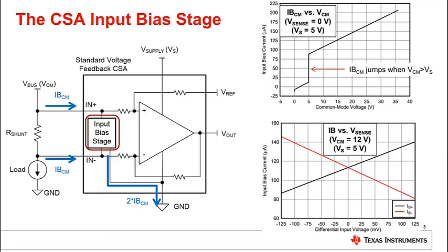In this plot, the common mode IB jumps once VCM begins passing 5 volts, because the supply voltage during the test was 5 volts. The input bias stage also has a relatively low differential input resistance in the range of a few kilo ohms, which contrasts the high input impedance of classical instrumentation amplifiers. The differential input resistance of the current sense amplifier will create a differential input bias current that flows into one pin and out of the other. This differential input current can usually be seen in the datasheet where the input voltage Vsense is swept and the input bias currents are measured. From this plot, you can determine the input bias stage's resistance by calculating the change in Vsense divided by the change in IB+.